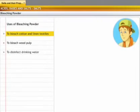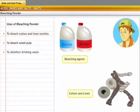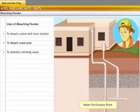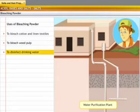It is used to bleach cotton and linen textiles and to bleach wood pulp and even used in the manufacture of paper. Bleaching powder is used to disinfect drinking water and make the drinking water clean and safe.